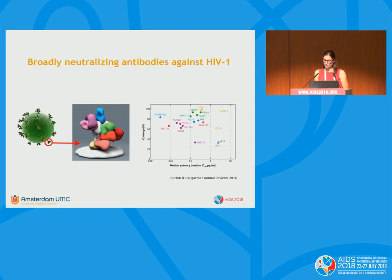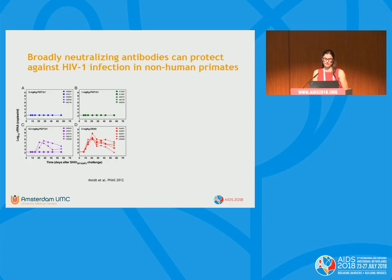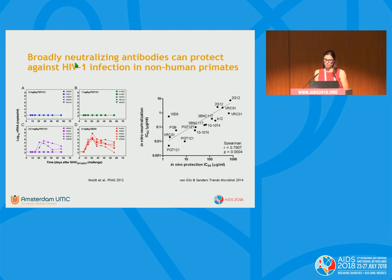One possibility is to use these antibodies to block transmission. In non-human primate studies, the antibody PGT121 was given at different concentrations to macaques, which were then challenged with SHIV-AD8-EO. High doses prevented infection with no viral load detected, while control animals were all infected. Combining all prevention studies in non-human primates, there is a very nice correlation between the in vitro potency of these antibodies against the challenge virus and the amount of protection in the animals.